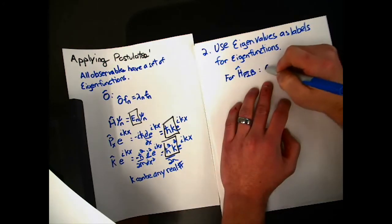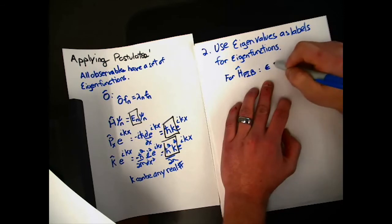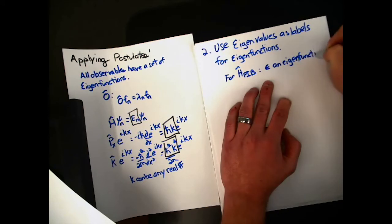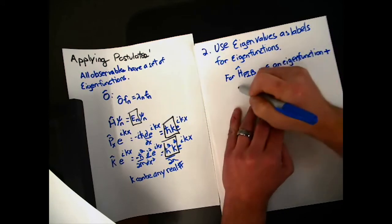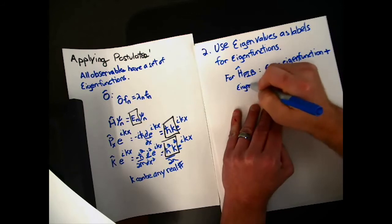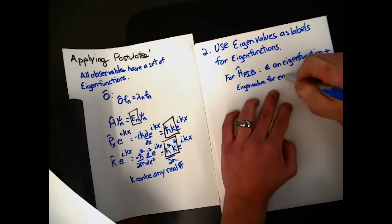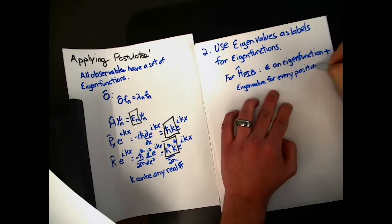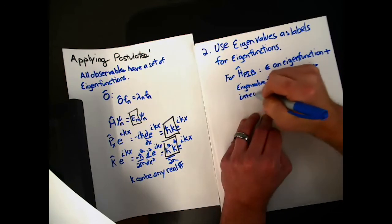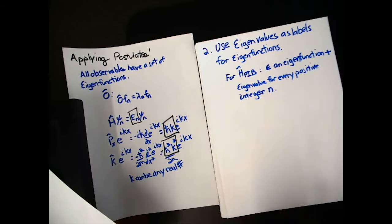There exists an eigenfunction and eigenvalue. There's an eigenfunction for every real number. And we can use that n as a label for it.